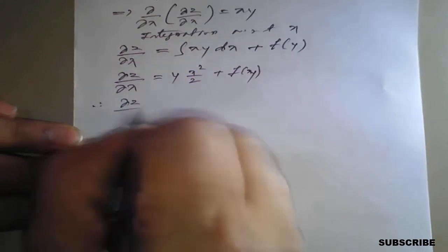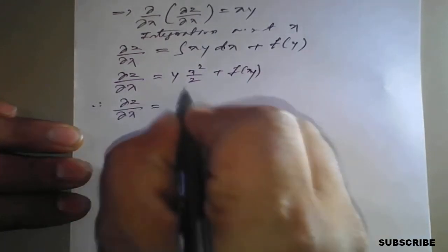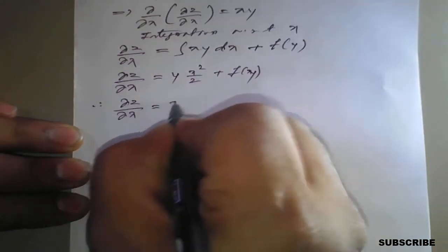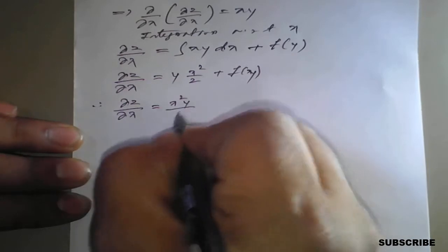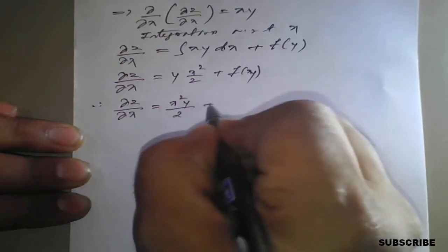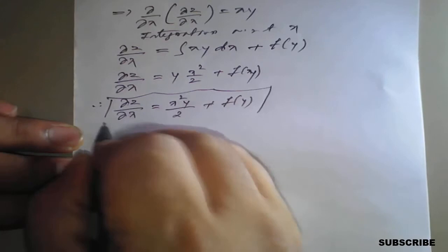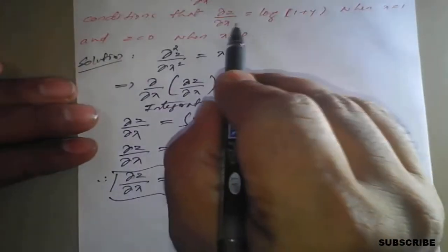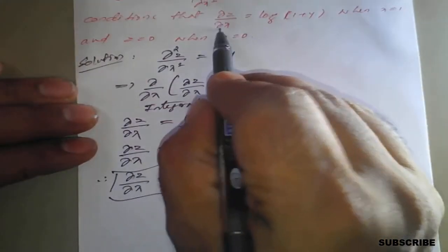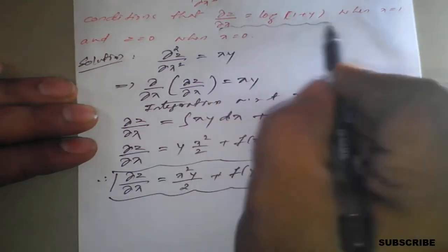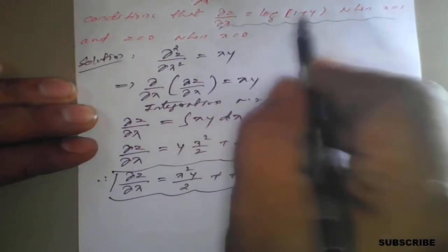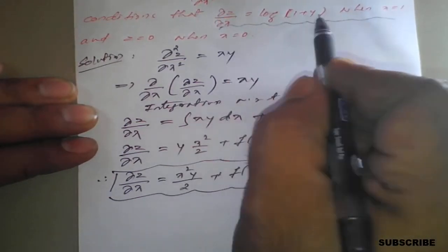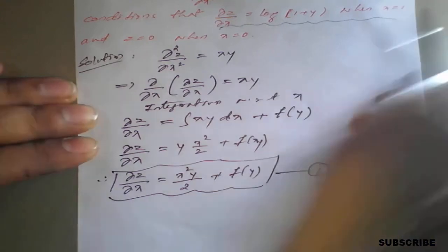Therefore, ∂z/∂x = x²y/2 + f(y). We will call this Equation 1, because the first condition given is ∂z/∂x = log(1+y) when x = 1.